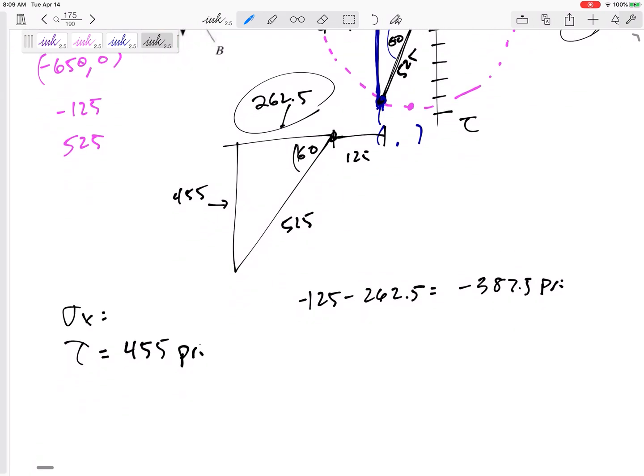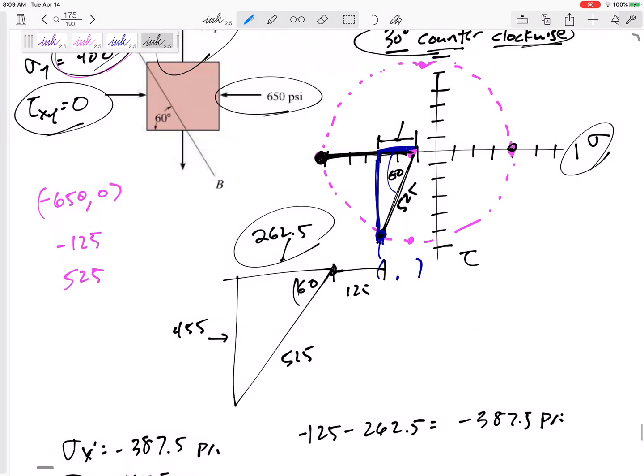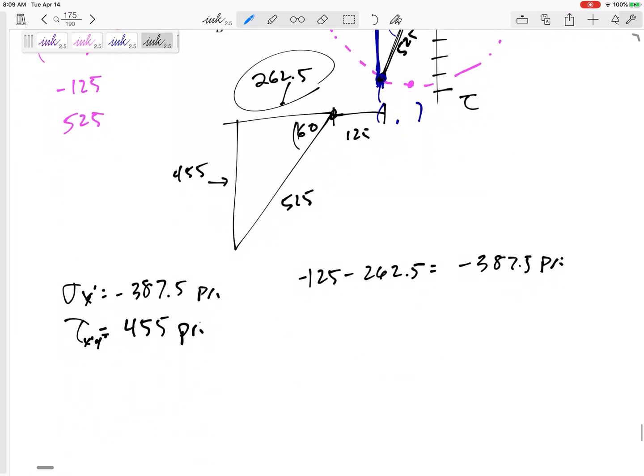That is my sigma X, my new sigma X, is negative 387.5 psi. If it asked for sigma Y, it would be somewhere over here at a similar 60-degree triangle. You don't have to do this again. You could just take your center and add 262.5: 137.5 psi.